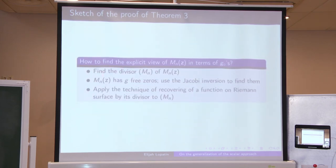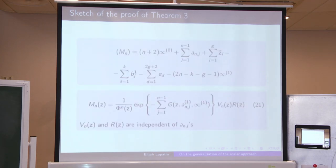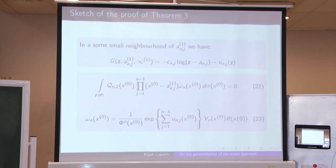The key steps are: find the divisor of M_N(z), determine the positions of the zeros to solve the Jacobian inversion problem, and apply the prescribed technique for recovering the function on the Riemann surface. Here is the explicit view of the weight. Then we apply the Gonchar-Rakhmanov theorem, now known as Rakhmanov's two-point method, to estimate the asymptotics of polynomial Q_N^2.